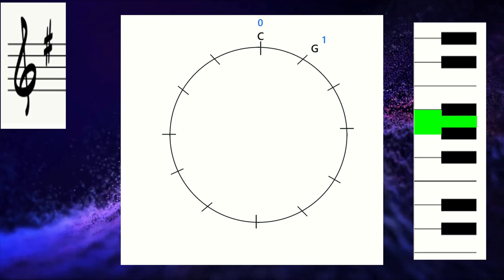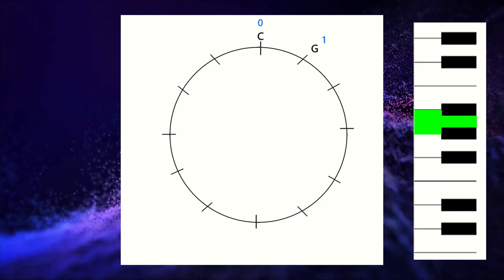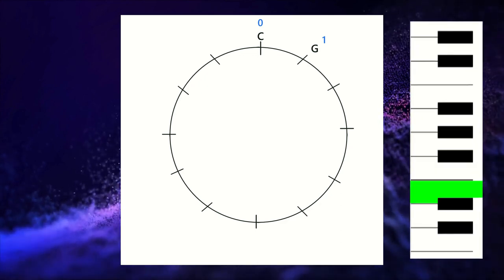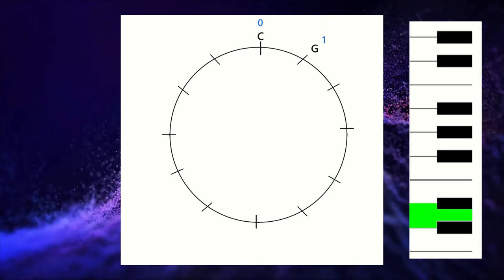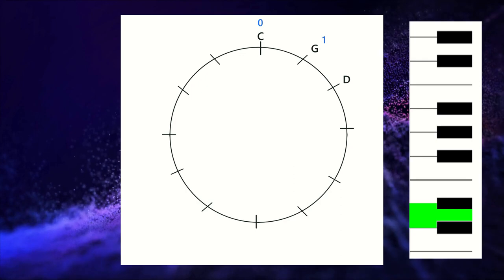To get to the next stop on our clock we're going to go up another perfect fifth from G, which is seven half steps - one, two, three, four, five, six, seven - and we land on D. And D as you can see has two sharps, F sharp and C sharp.